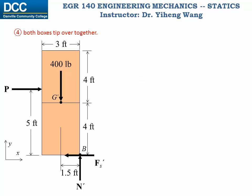Lastly, consider the situation when both boxes tip over together. We sketch the free body diagram treating both boxes as one system, positioning the normal force N' at the edge of the box at point B. The moment equilibrium equation is: ΣM_B = −P·(5 ft) + 400·(1.5 ft) = 0, and from here we solve for the applied force P = 120 pounds.